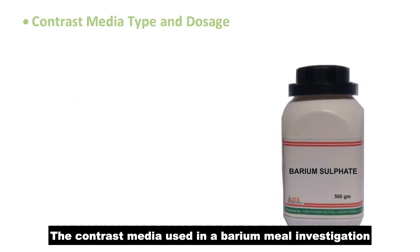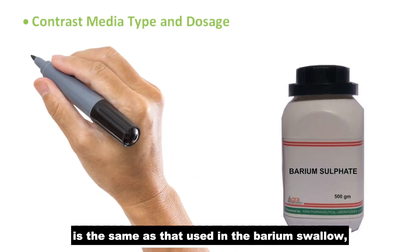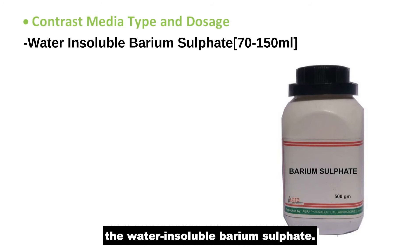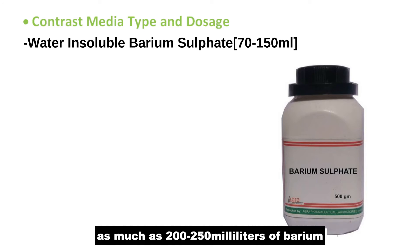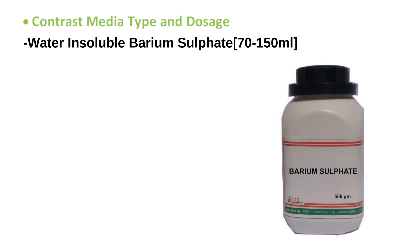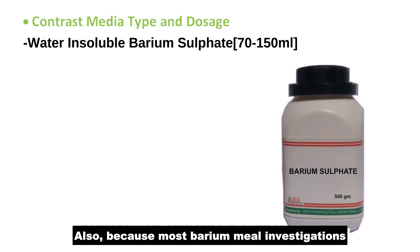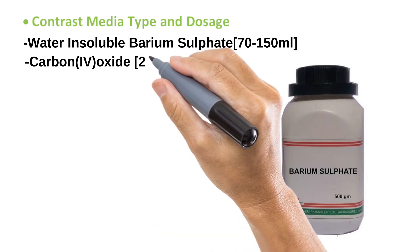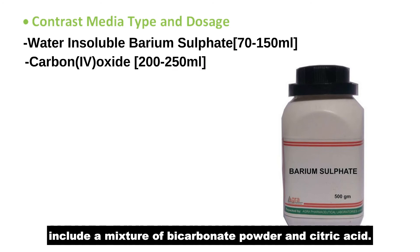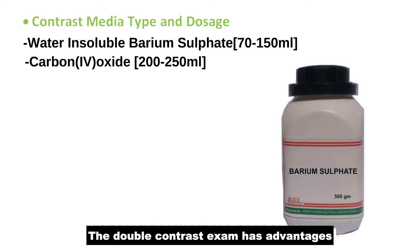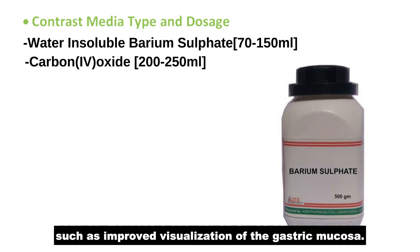The contrast media used in a barium meal investigation is the same as that used in the barium swallow — the water-insoluble barium sulfate. 70 to 150 millilitres of barium would do for a standalone barium meal examination, but when a follow-through is being carried out, as much as 200 to 250 millilitres of barium might be required. Also, because most barium meal investigations are carried out using double contrast, a carbon dioxide-producing substance would be required. Examples include a mixture of bicarbonate powder and citric acid. The double contrast exam has advantages such as improved visualisation of the gastric mucosa.